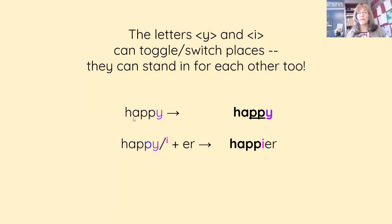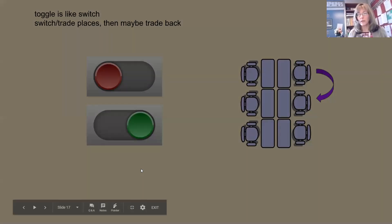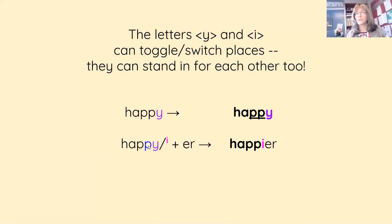So if you have the word happy, H-A-P-P-Y, there's your Y. Sometimes you can toggle between a Y and an I. And that will happen for a couple of reasons, and one of them, we have to look at the letter in front and see if it's a consonant. If it is, we're probably going to toggle Y to I.